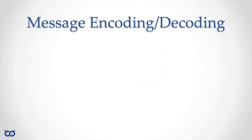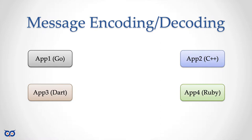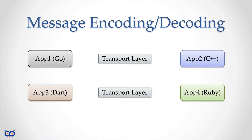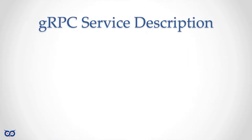I also showed you a slide about having a set of applications written in a number of languages where you can use protobuffer messages to allow communication between different applications. Because protobuf generates the interface and files to encode and decode messages, you don't have to worry about whether the message was encoded in Ruby, Go, or Dart — once it hits the wire, you can read that message.